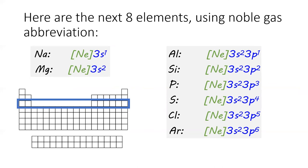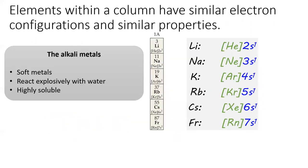But in your own heads, if you want to, you can replace that neon with 1s² 2s² 2p⁶. Note that using the noble gas abbreviation makes it very clear why the elements in the same column have similar chemical properties. They have similar electron configurations for their outermost electrons.